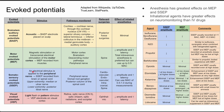Somatosensory evoked potentials are next. The electrical stimulus is applied to the peripheral nerve, and the SSEP is recorded from the brain or spinal cord. In the upper extremity, that's the median or ulnar nerve, and in the lower extremity, it's the posterior tibial nerve. Pathways monitored include the peripheral nerve, the dorsal root ganglion, and the posterior column of the spinal cord. Relevant surgeries include cardiovascular, endovascular, intracranial, and spinal surgeries. Anesthetics have a similar effect to motor potentials — decreased amplitude and increased latency — and you can use MAC up to 0.1 without too much of an issue.